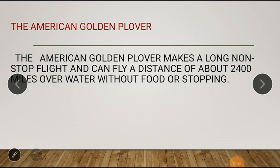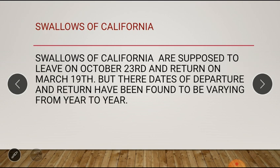For the American golden plover: it makes a long non-stop flight and can fly a distance of about 2,400 miles over water without food or stopping. This answer is in page number 45, second paragraph. For the swallows of California — the answer is in page number 45, last paragraph: swallows of California are supposed to leave on October 23rd and return on March 19th, but their dates of departure and return have been found to be varying from year to year.